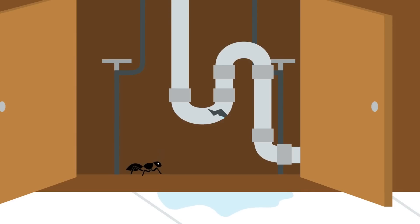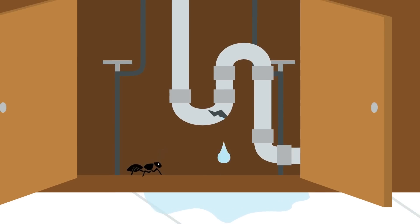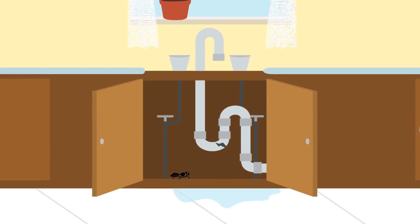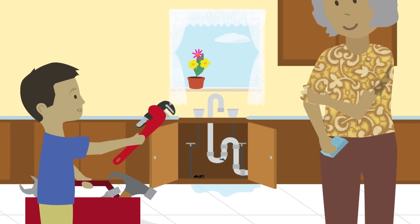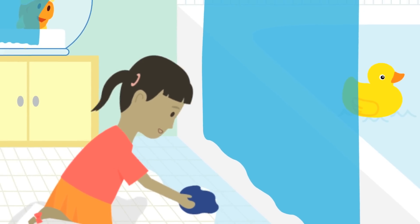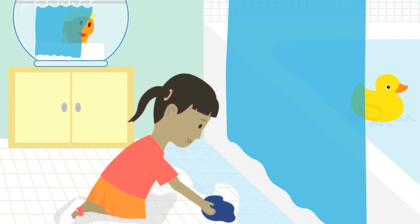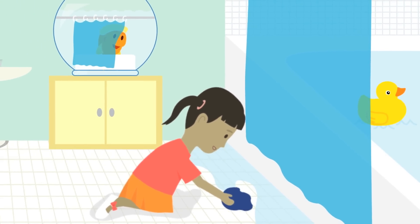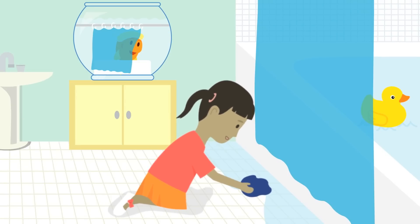If you see pipes that are leaking, tell a grown-up about it. If you spill something wet, clean it up. Don't shout about it. When you shower or bathe, keep the puddles inside. If you splash water around, it will need to be dried.